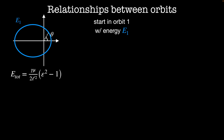We'll start by remembering that the total energy of an orbit is determined by the shape of that orbit. It's proportional to the eccentricity squared minus 1, where the proportionality constant is the coefficient of the central force times the reduced mass divided by twice the angular momentum squared.